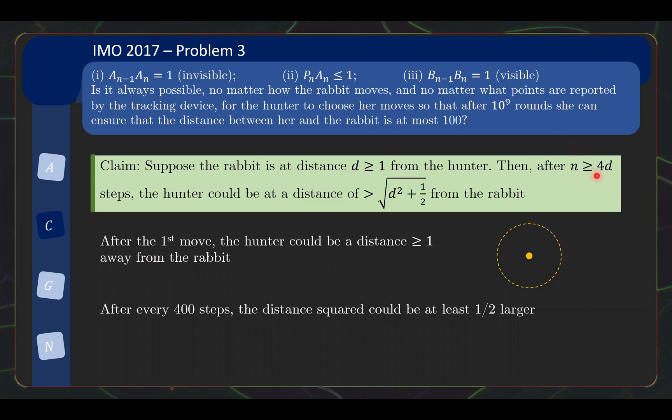So, after 400 steps, the distance squared, there is a scenario where the distance squared is bigger than d squared plus half. So, basically, the distance squared has increased by at least half. And so, if I do this a total of 2 times 100 squared times, then my distance squared will have increased to at least, or rather, bigger than 100. The distance is strictly bigger than 100. So, sorry for the typo here. But the point is basically that this number here is less than 10 to the 9. So, that is pretty much all we need to prove this problem.